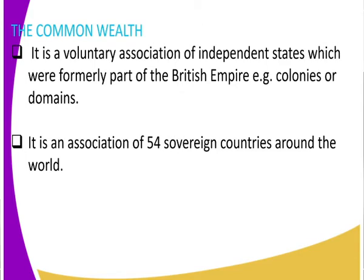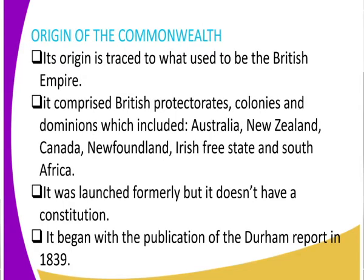Can you look at the origin of the Commonwealth? It is traced back to the British Empire. It comprises most of the British protectorates — for example, Kenya and Uganda — the British colonies, and domains which include Australia, New Zealand, Canada, Newfoundland, the Irish Free State, and finally South Africa. Those comprise the British protectorates, the colonies, and also the domains.